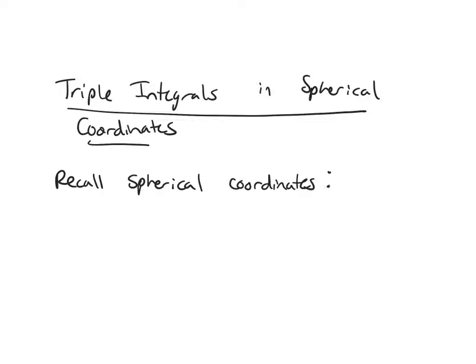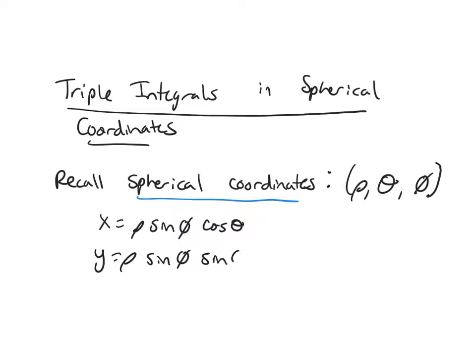Remember that they're given by ρ, θ, and φ. The conversion equations from rectangular to spherical are: X is ρ sine φ cosine θ, Y is ρ sine φ sine θ, and Z is ρ cosine φ.